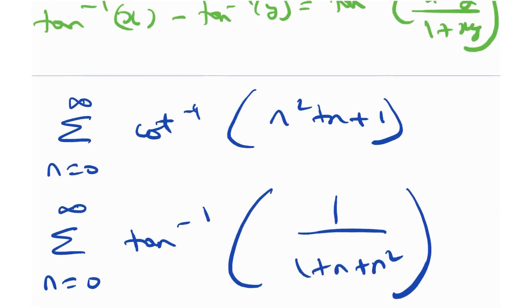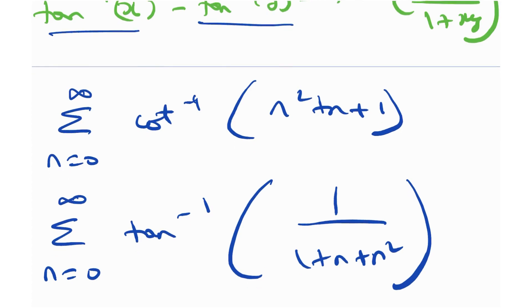Now, if you actually notice, tangent inverse x minus tangent inverse y. So whenever we want to telescope something, you have to write it as a difference of two quantities. And here we have a single quantity. So effectively, the single quantity tangent inverse 1 by 1 plus n plus n squared, this is acting as the right hand side. So if we are able to somehow write it as a difference of arc tangents, we can figure out a way in which we can kind of telescope this. So we need to write it in a difference of arc tangents, basically.